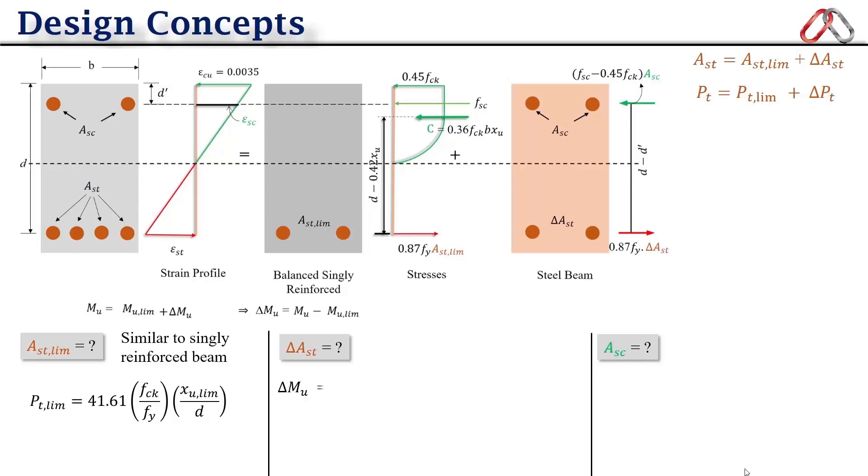And for delta A_st, we can find out the delta M_u from a couple comprising a compressive force and tensile force with lever arm d minus d dash. Let's say from the tension side that delta M_u is equal to M_u minus M_u limiting, and it will be 0.87 f_y into delta A_st into d minus d dash. And further we can find out the value of delta A_st: it will be M_u minus M_u limiting upon 0.87 f_y into d minus d dash.